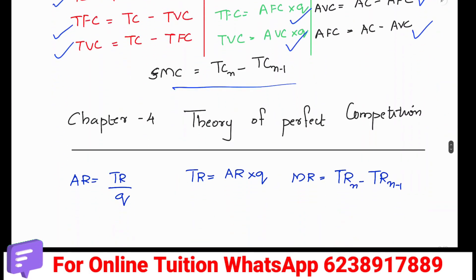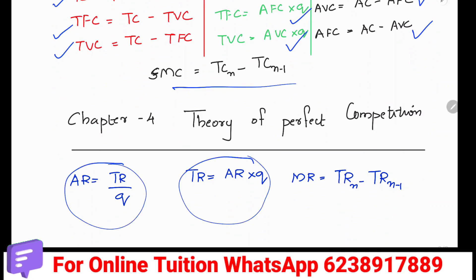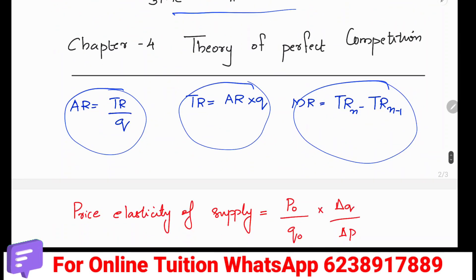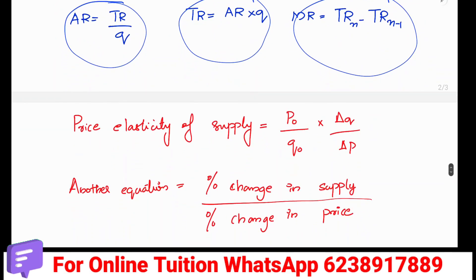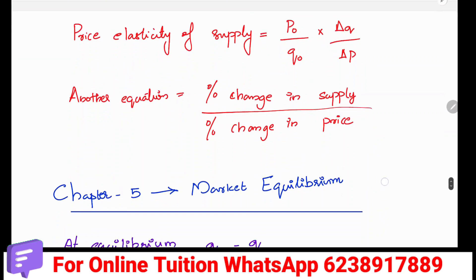The fourth chapter is the theory of perfect competition. AR equals TR by Q, TR equals AR into Q, and MR equals TRn minus TRn-1. The price elasticity of supply uses the same equation: P0 by Q0 into delta Q by delta P — percentage change in supply divided by percentage change in price.